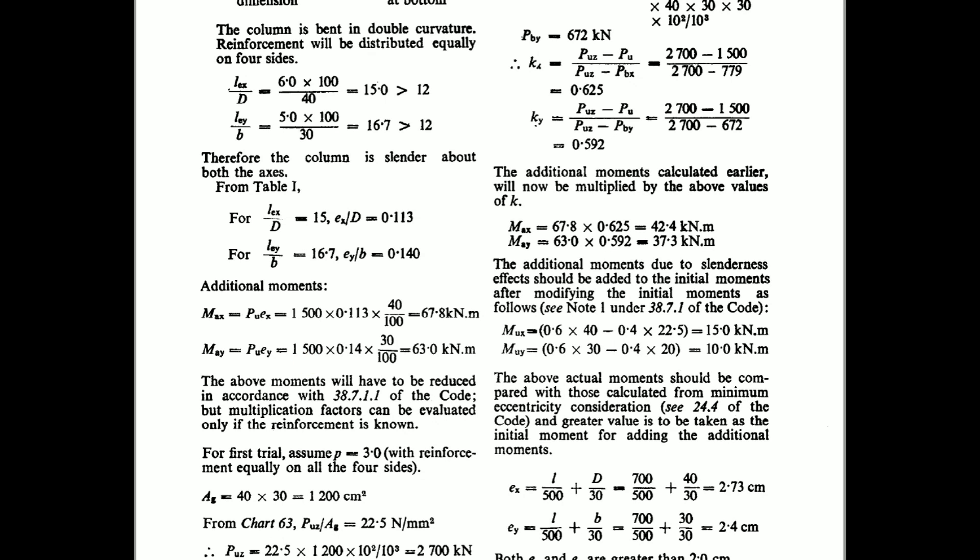So friends, this is how you calculate the additional moments if a column is slender about the major axis or minor axis. I hope this video was useful for you. Please do comment in the comment box. If you like the content, do share it with your friends, and don't forget to subscribe to the channel for more videos. Thank you for watching.